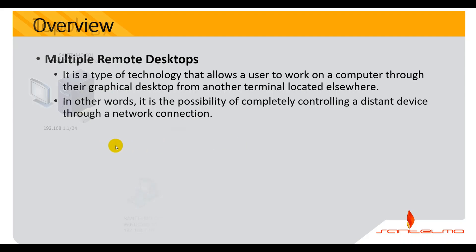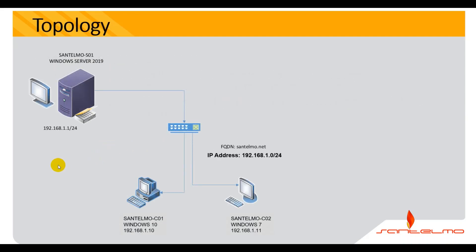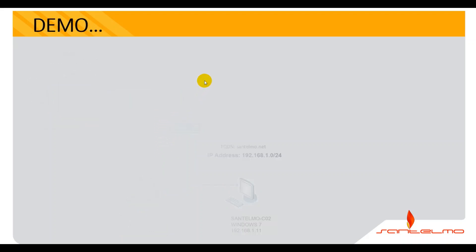Our topology is this: you've got the Windows Server 2019 on our first server and then we've got two clients. You just have to ensure that these clients and the server can communicate with each other before we move on to the demonstration. Let's move on to the demo.